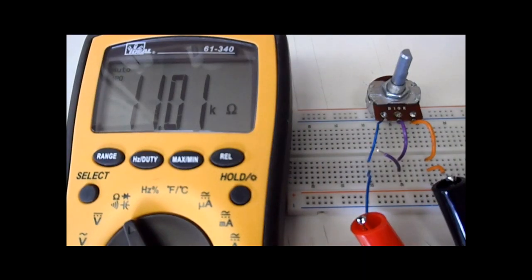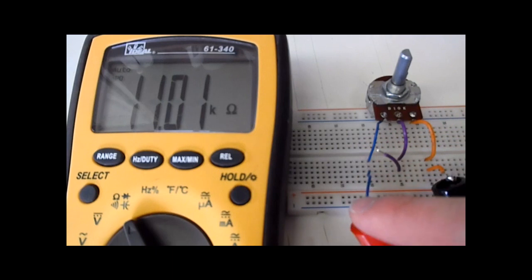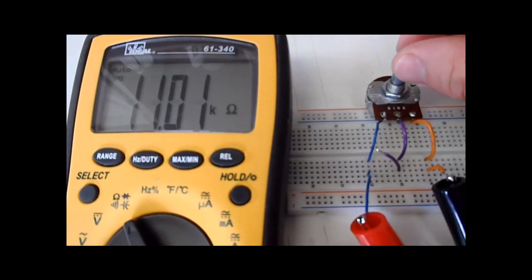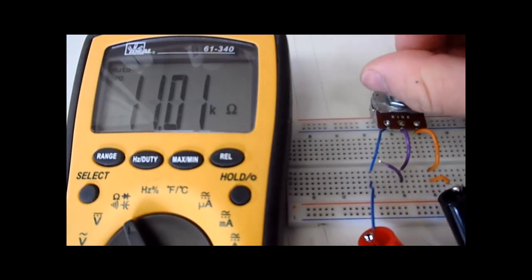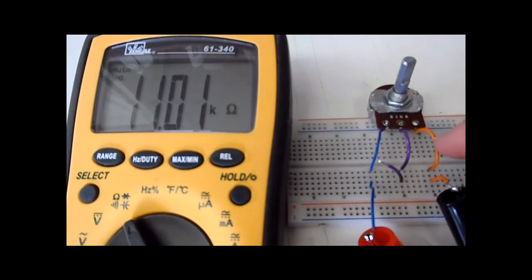Now the first measurement I want to start off with is measuring from terminal A to terminal C. Now if you notice when I turn this it doesn't change. I just want to stress the fact that the distance between A and C is never varied, so it's always the same resistance.